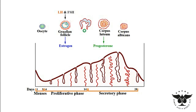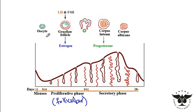For this question I will discuss the hormonal changes as well as the changes in the endometrial wall that happen during the menstrual cycle. The first phase I would like to talk about is the proliferative phase, the other name for it is the follicular phase. During this stage, Graafian follicles are producing estrogen.